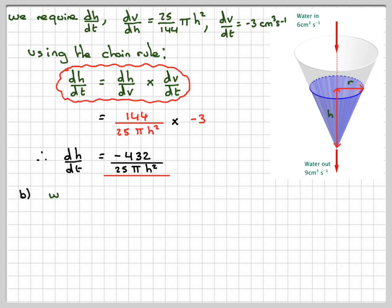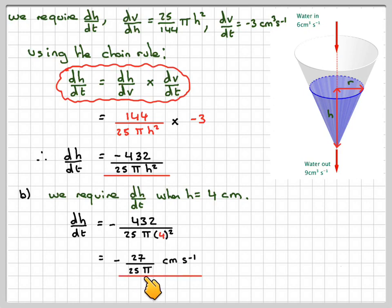We need to now find dh/dt when h is 4 cm. So what we do is put 4 in here. So we've got -432/(25π × 4²). And that's going to give me -27/(25π) cm/s. So the water height is going to change at that rate.